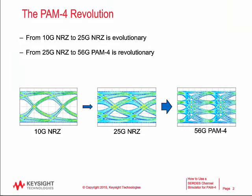If you haven't noticed, when we went from 10 gigabits per second — the traditional NRZ, non-return to zero signaling — and moved to 25G, that was pretty tough, but it was a linear or evolutionary type change. The transition to 56 gigabit PAM4, Pulse Amplitude Modulation with four different levels, is actually revolutionary, requiring some new technology in how we do simulations and in the technology being developed for the transmitters and receivers.